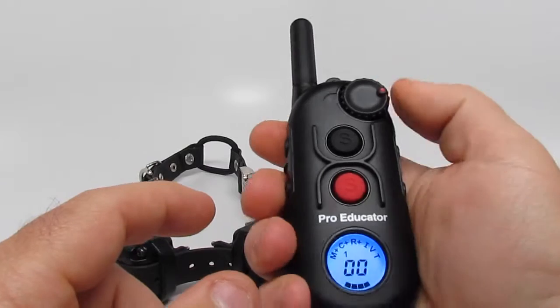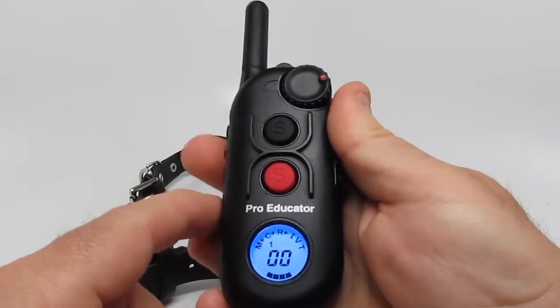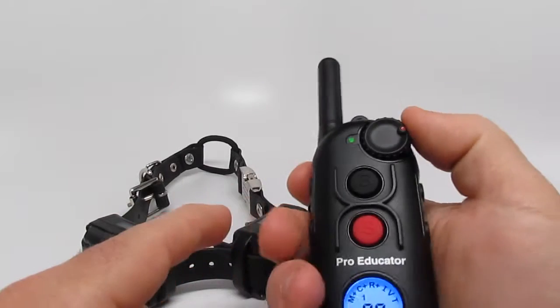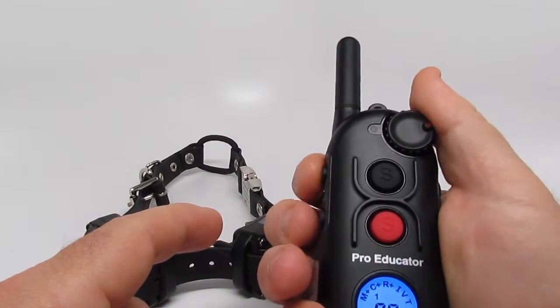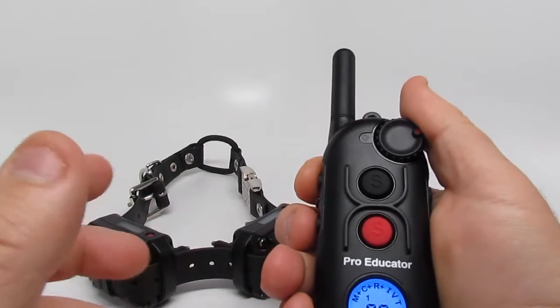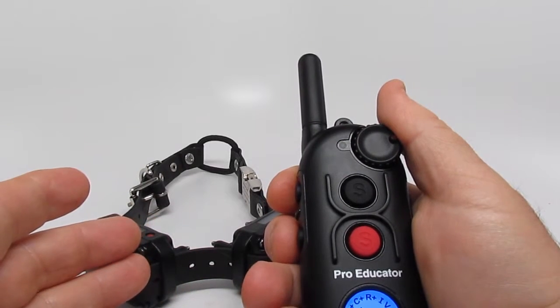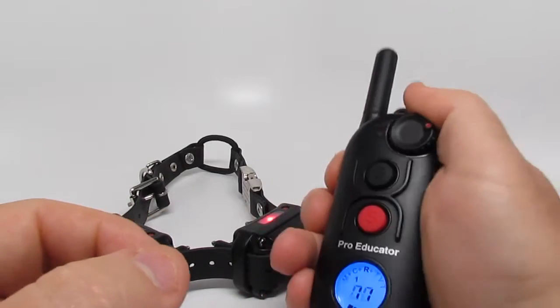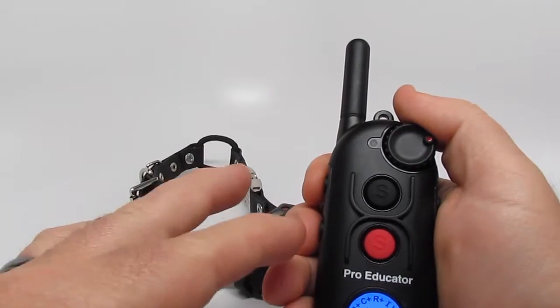Now what's cool, what separates this from all the other e-collar technology products, it has ramp mode. So what that means is it goes from zero to whatever level you have them set at in one second. So it's not an instant, it is a gradual increase.